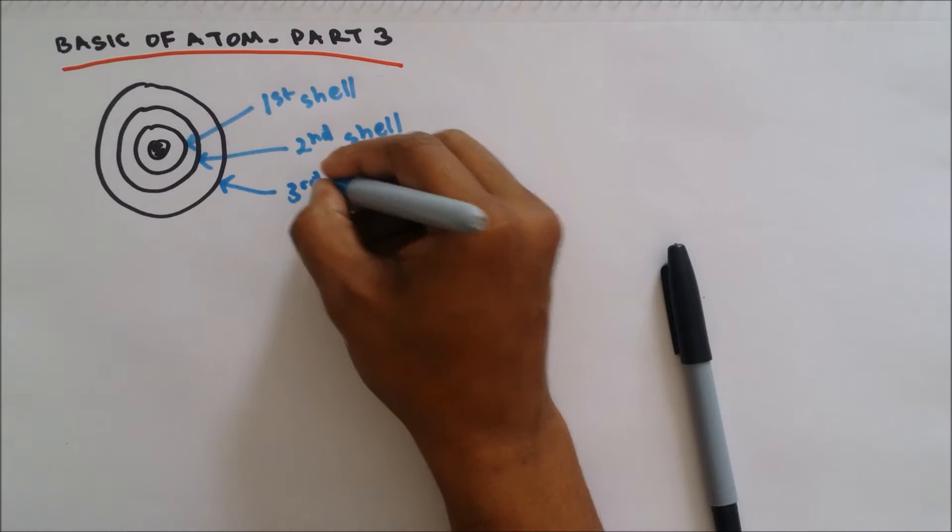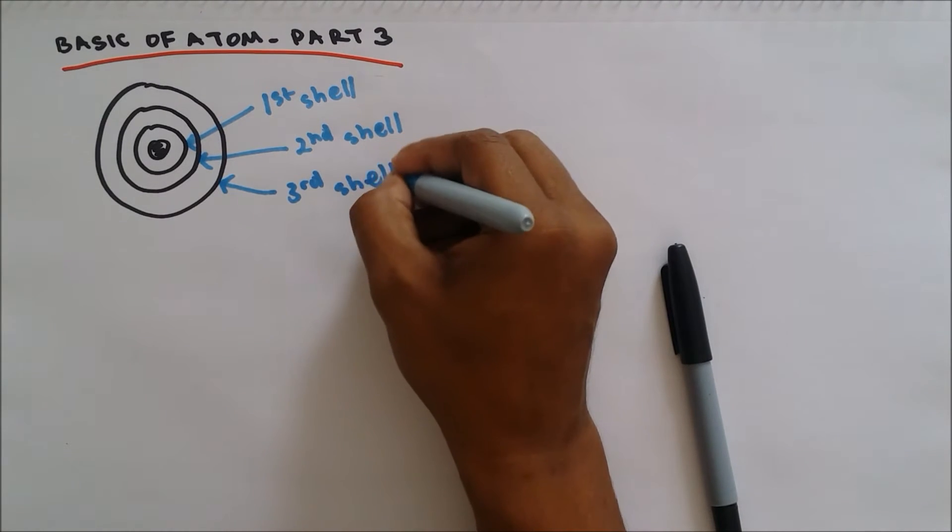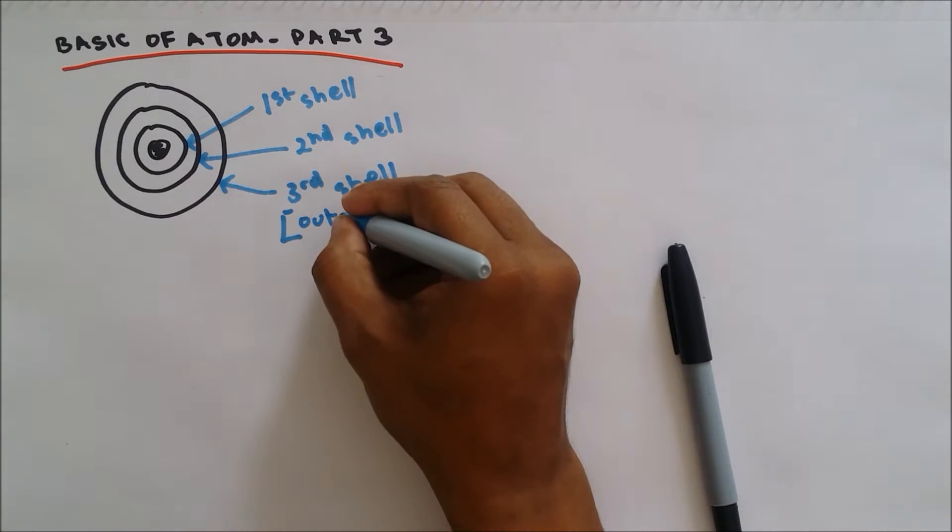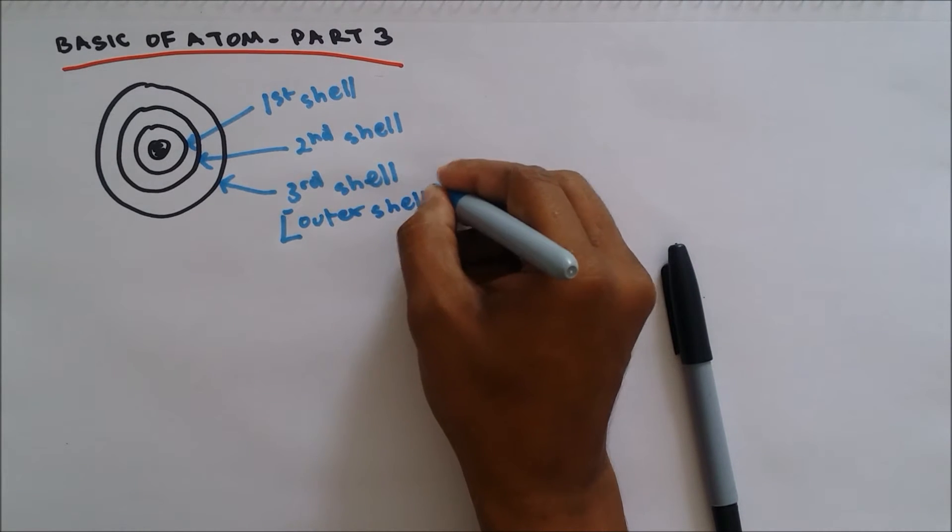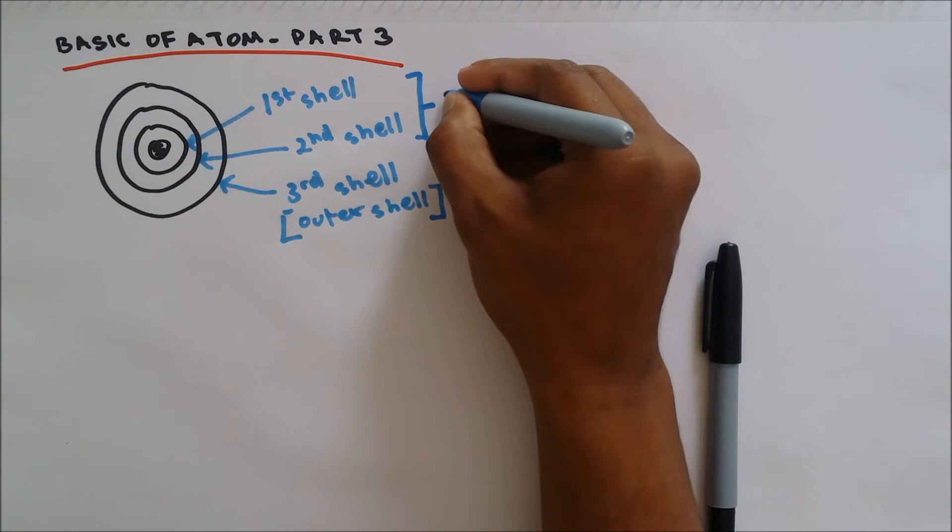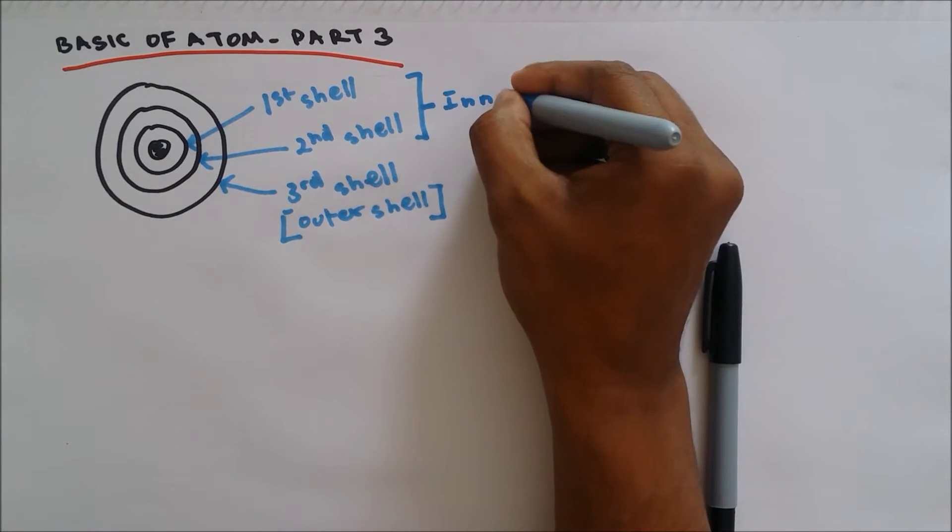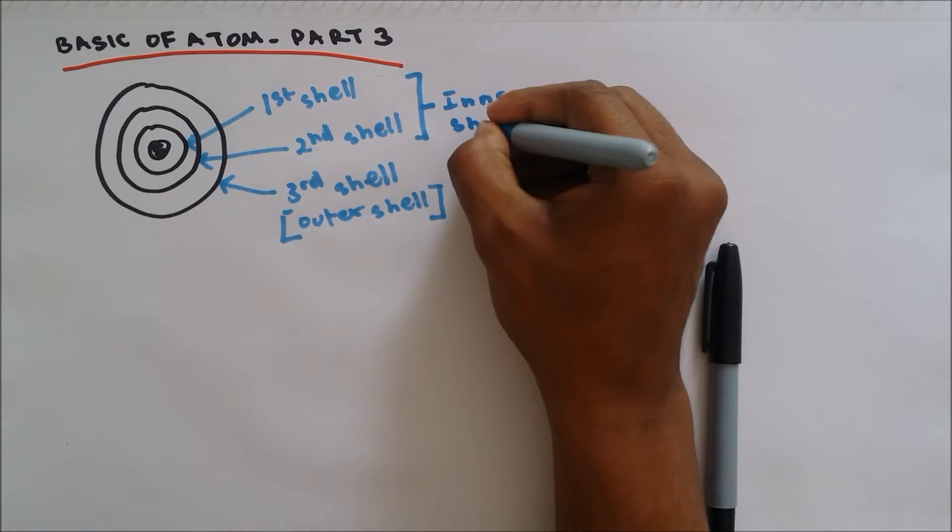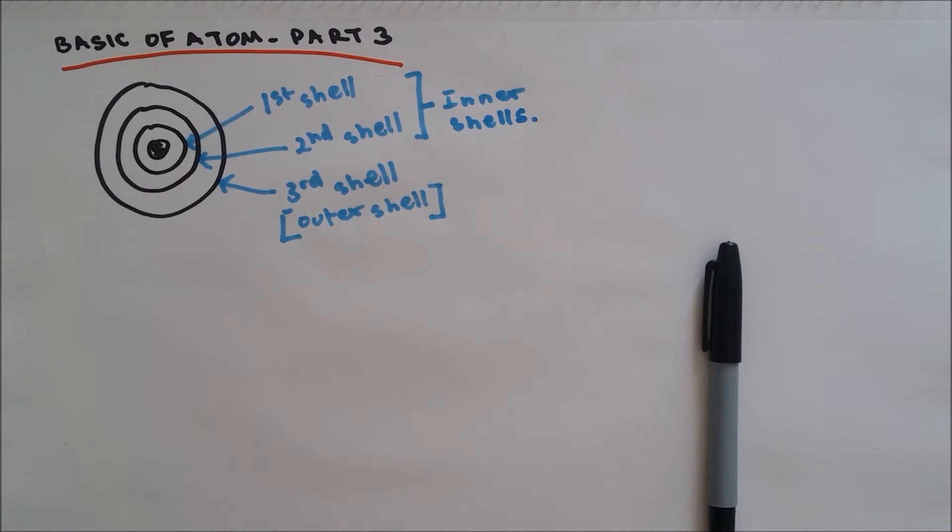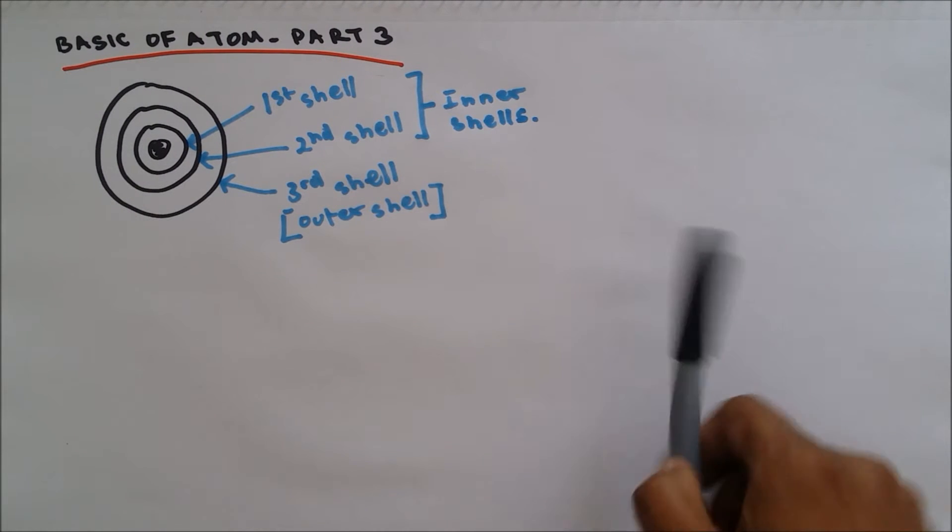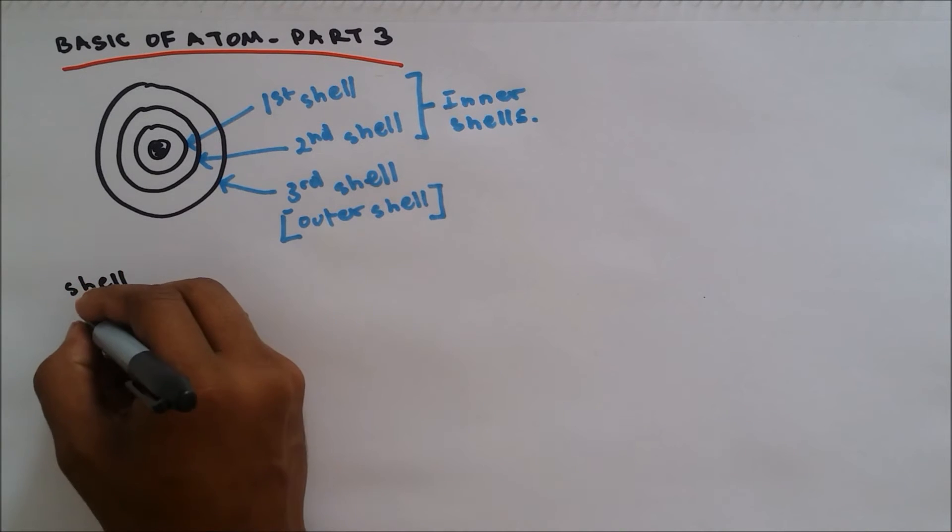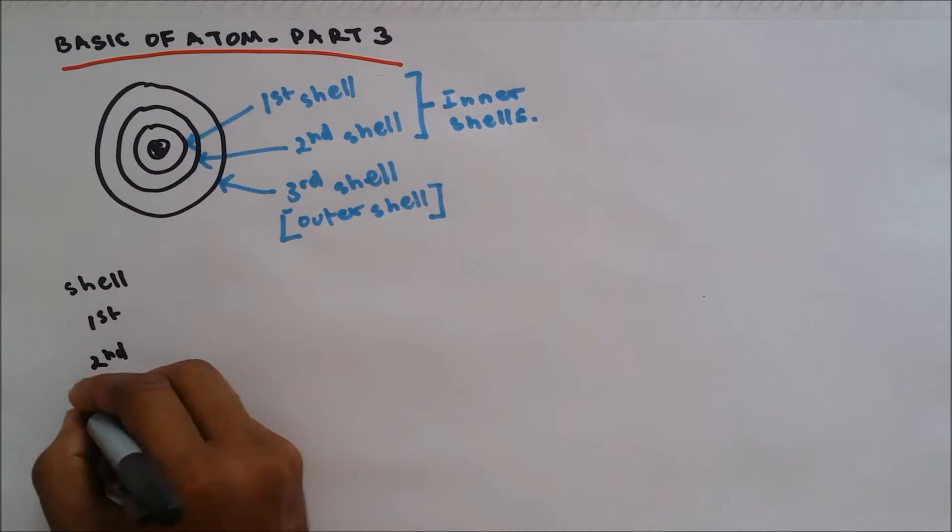This is the third shell. Now if a shell is found outside, it can be called as outer shell. So these two are found inside, so it's called inner shells.